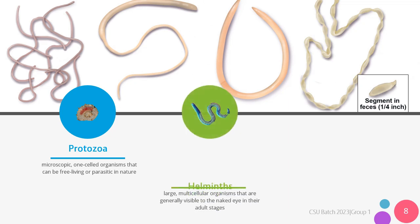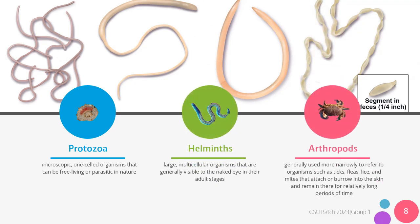Now, let's see the difference between protozoa, helminths, and arthropods. Protozoa are microscopic, one-celled organisms that can be free-living or parasitic in nature. Helminths are large, multicellular organisms that are generally visible to the naked eye in their adult stages. Arthropods are generally used more narrowly to refer to organisms such as ticks, fleas, lice, and mites that attach to and burrow into the skin and remain there for relatively long periods of time. Now that we've defined some terms and discussed the classification of parasites, let's get into each individual classification.